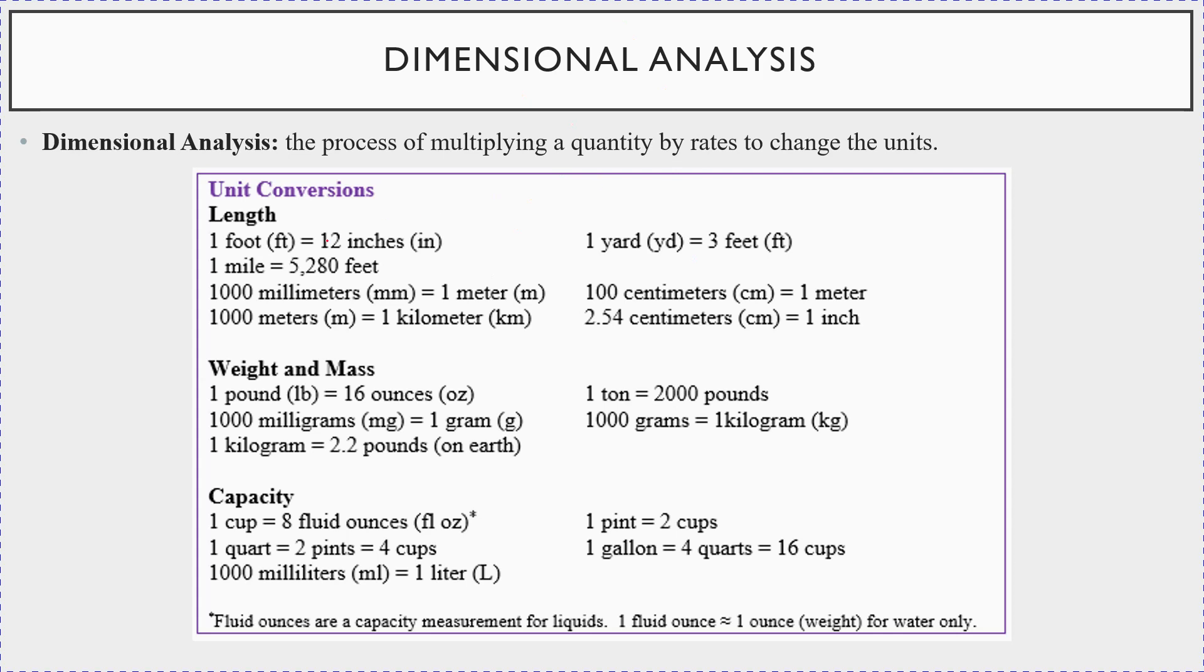So for example, two that we'll use a bunch in this lecture here is the following. Like one foot is equal to 12 inches, right? We know that. So as a ratio, you could write this as 12 inches to one foot. Or you could flip it. You could do one foot to 12 inches, right? And so what we're going to do is you're going to be multiplying that by some given quantity to convert the units.